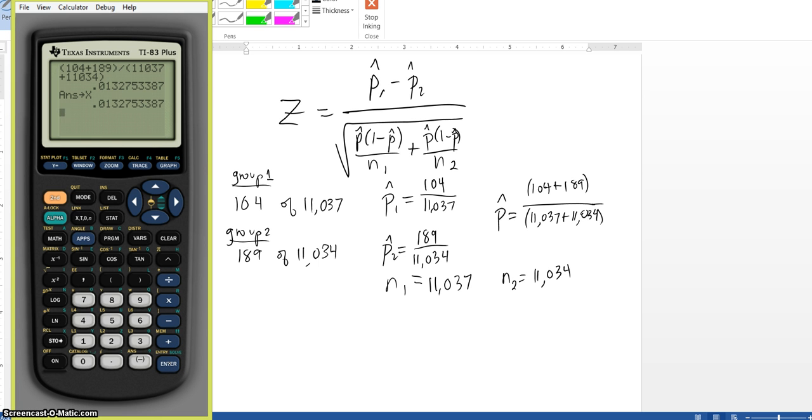So now to find my standard error, I'm going to take my square root of my P hat, which is X, times 1 minus X, divided by N1, which is 11,037...